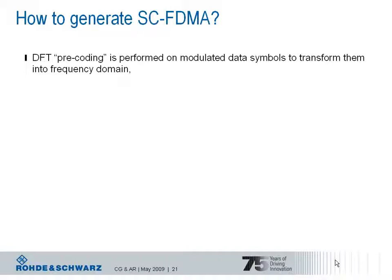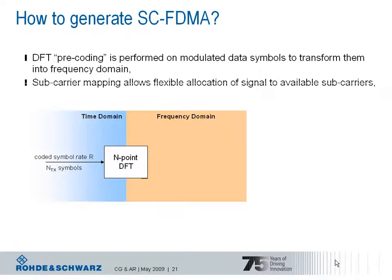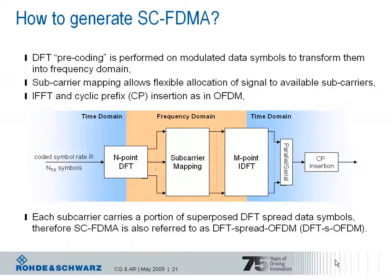How is a single carrier FDMA signal generated from a high-level perspective? There is an additional block in the signal processing chain: a discrete Fourier transform is performed on the data symbols after serial-to-parallel conversion, which transfers them from the time domain into the frequency domain. Afterwards, there is subcarrier mapping as in OFDM and an IFFT to transfer the signal back into the time domain. After parallel-to-serial conversion, the cyclic prefix is inserted. The last two blocks are the same as for OFDM, so there is no difference to the downlink signal generation chain.